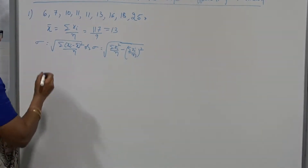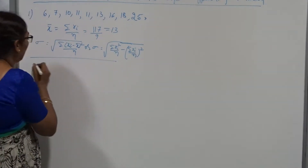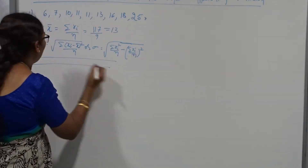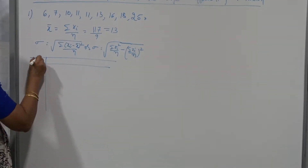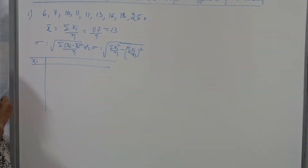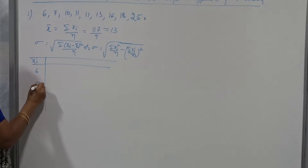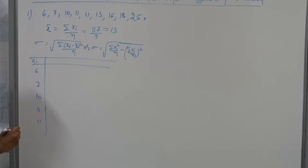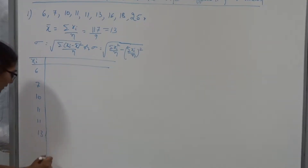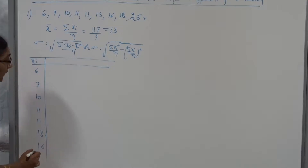This is the alternative formula — either you go for this formula; the choice is yours. Here the mean is a whole number. I am going to solve by using the first formula. If you want to go for the first formula, first you take xi: 6, 7, 10, 11 — and they are having another one — 11, 13, 16, 18, and 25.